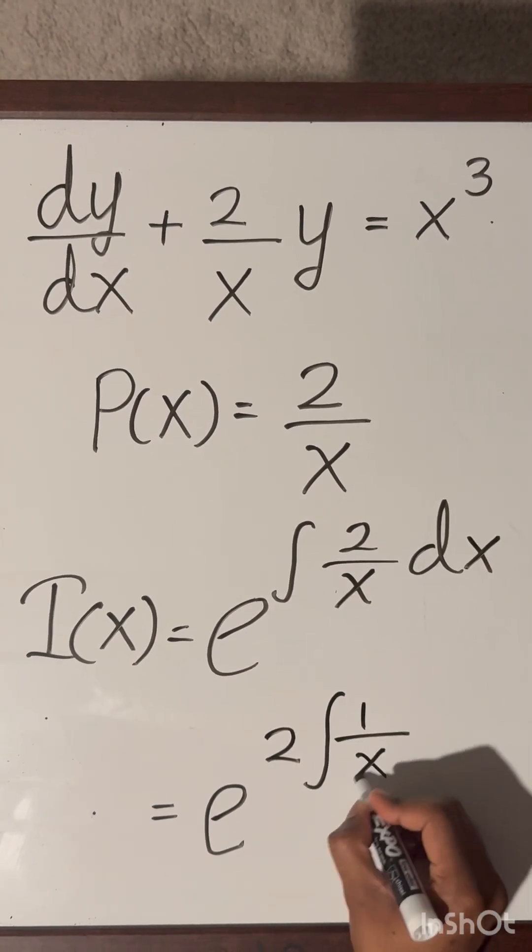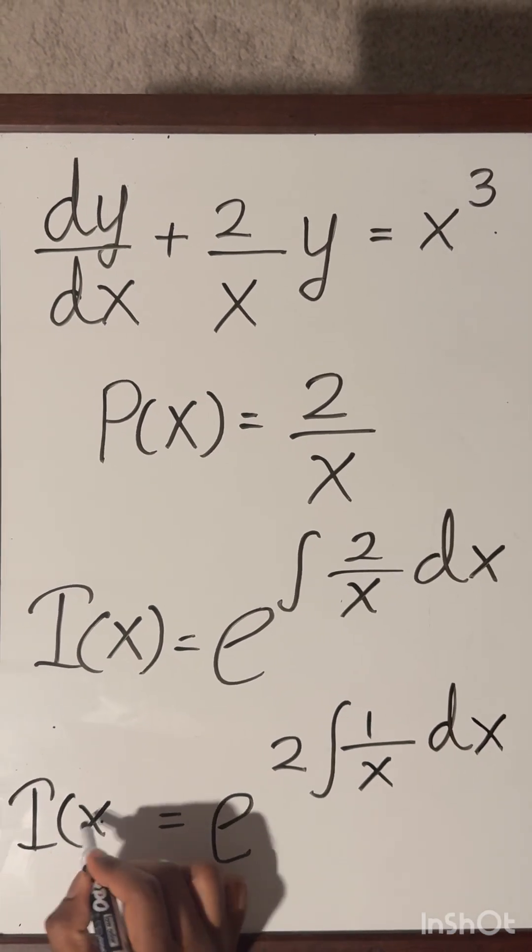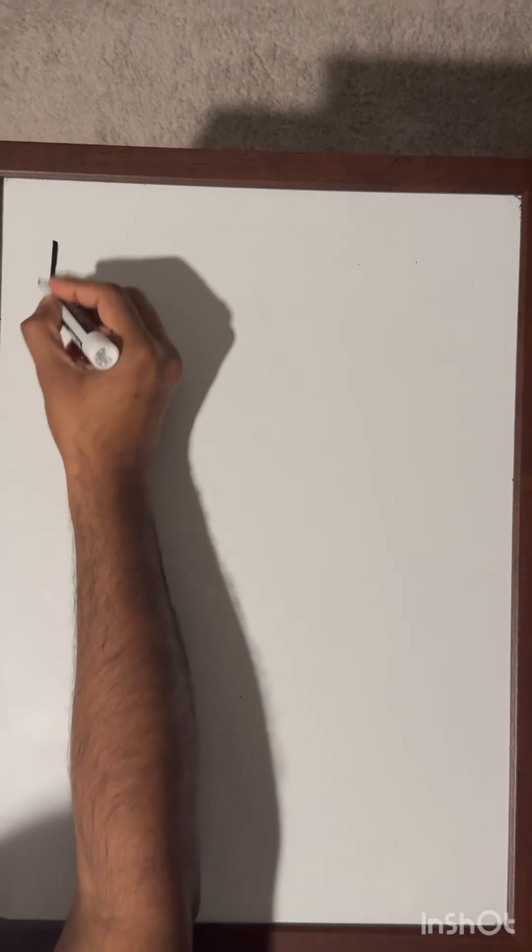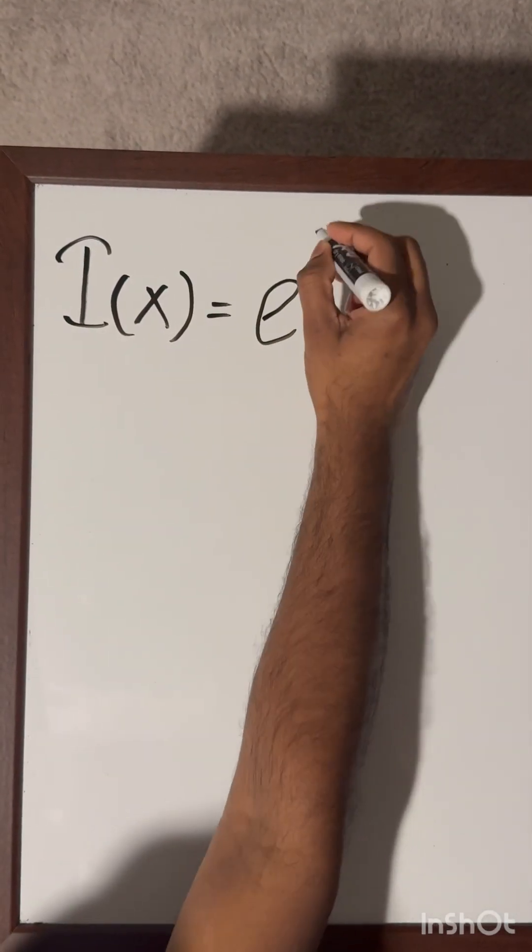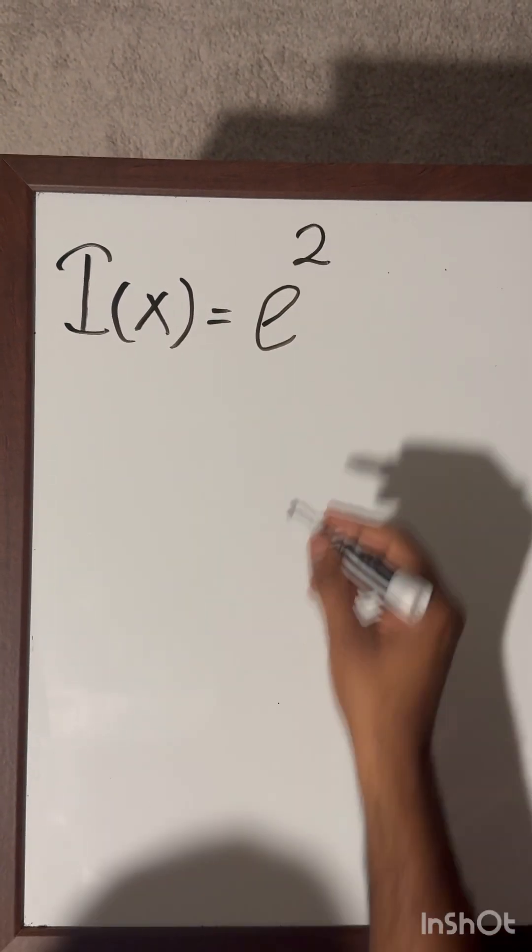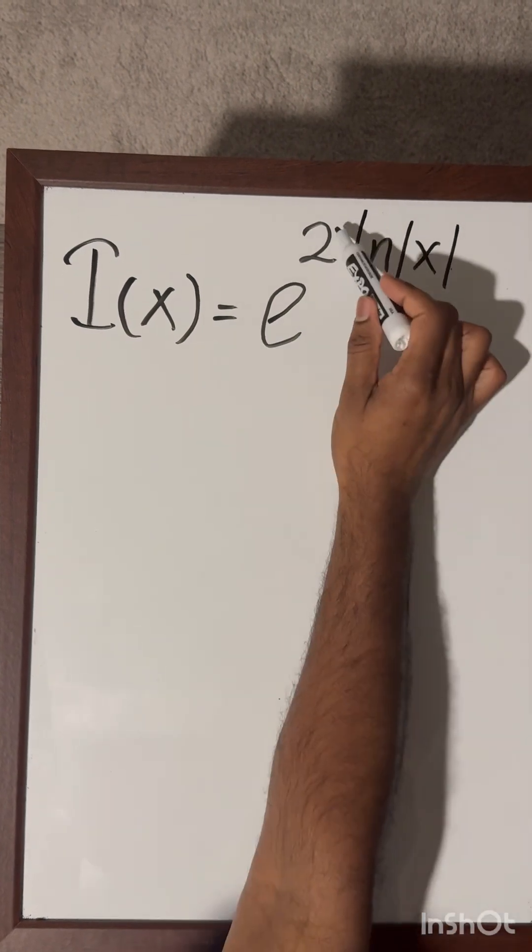I am going to bring this constant 2 outside. Then we can write down e to the power 2 times integral of 1 over x dx. We know that the integral of 1 over x is ln of x. Then we can write down the integrating factor as e to the power 2 times ln of x.